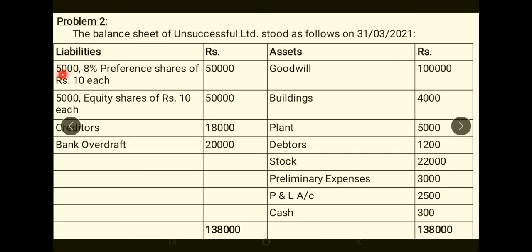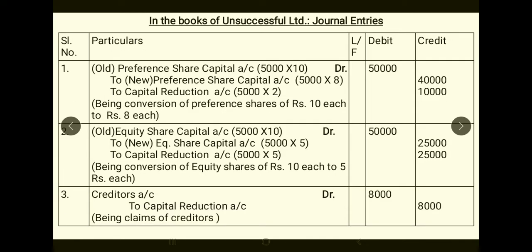Adjustment 1: Rs.10 Preference Shares are to be reduced to an equal number of fully paid shares of Rs.8 each. Journal entry: Old Preference Share Capital Account debit — 5,000 × Rs.10 = Rs.50,000; to New Preference Share Capital — 5,000 × Rs.8 = Rs.40,000; and to Capital Reduction Account — Rs.10,000 (the benefit of Rs.2 per share × 5,000 shares).